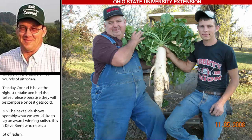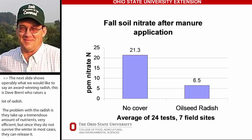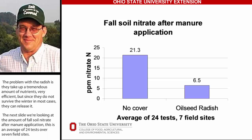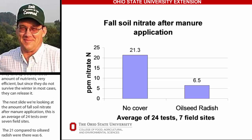Looking at the amount of fall soil nitrate after manure application — this was an average of 24 tests over seven field sites. Where we had no cover, we had 21.3 parts per million nitrogen, compared to where we had oilseed radish, where we had 6.5 parts per million in the soil. Those radishes take up a lot of nutrients; however, they can be an issue going into the winter when they die.